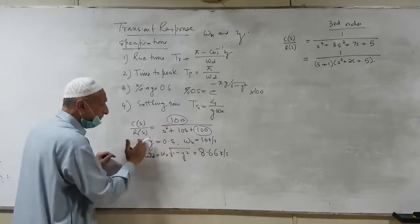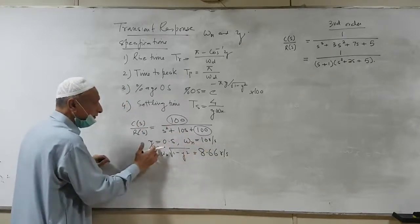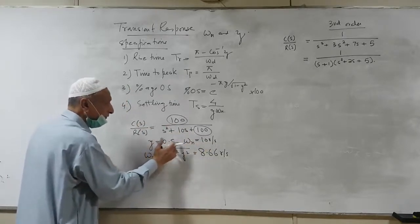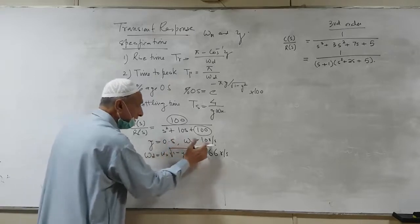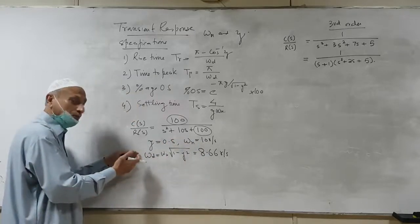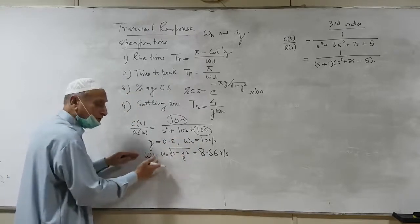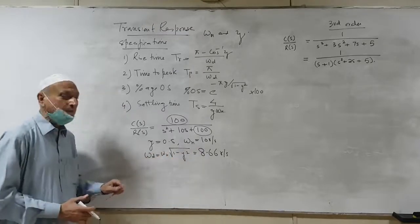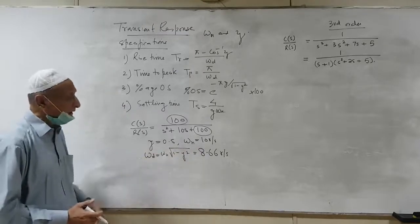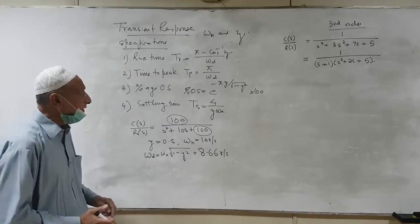Once we have done that, we have found out zeta, which is 0.5, omega n is 10, and in addition we need omega d. By definition, omega d is equal to this expression, and if you calculate, it comes out to be 8.66 radians per second.